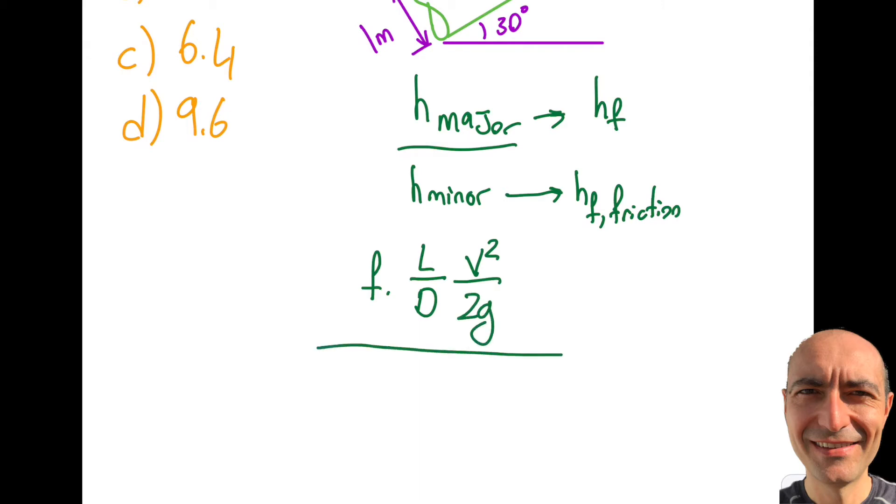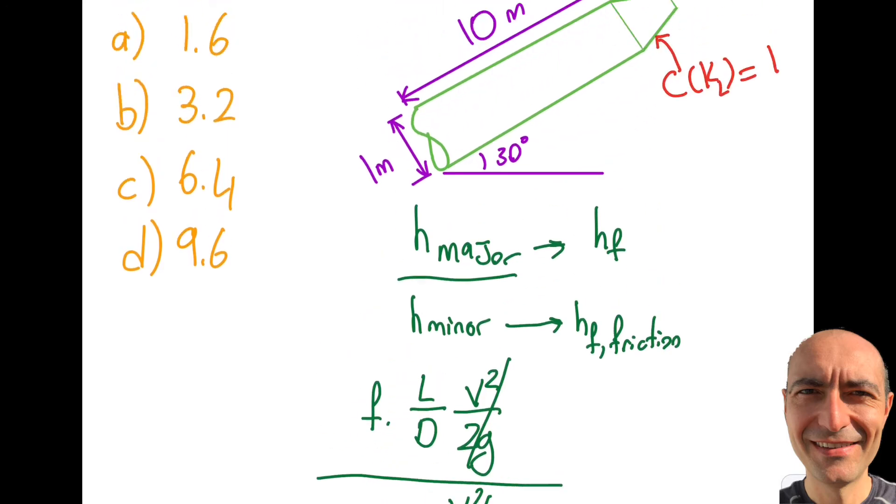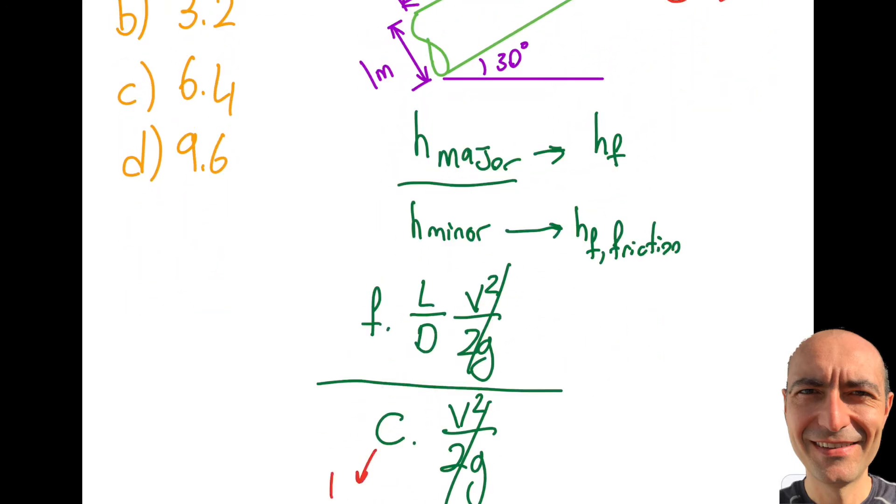The minor loss on the other hand is written as C V squared over 2G. So that is being asked to me, this ratio. And right there and then you can see that this V squared over 2G's kind of cancel each other out. C is one so that's taken care of.